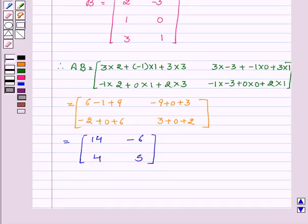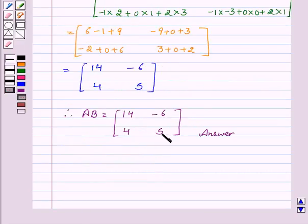Therefore AB equals 14 minus 6, 4, 5, which is the required answer.